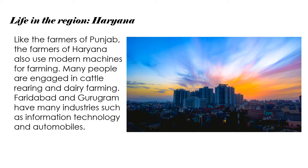Haryana: Like the farmers of Punjab, the farmers of Haryana also use modern machines for farming. Many people are engaged in cattle rearing and dairy farming. Faridabad, Bhiwani and Gurugram have many industries such as information technology and automobiles.